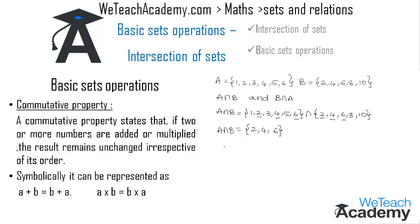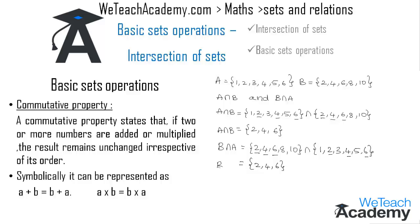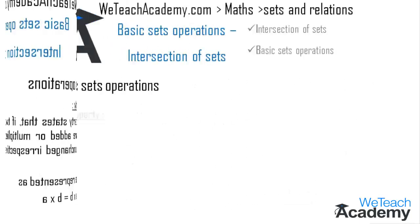Now let us find B intersection A. The elements of B are {2,4,6,8,10} intersected with A = {1,2,3,4,5,6}. The common elements are again 2, 4, and 6. So B ∩ A = {2, 4, 6}. We observe that A ∩ B equals B ∩ A, and we conclude that A intersection B is equal to B intersection A — the commutative property holds.